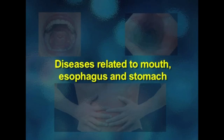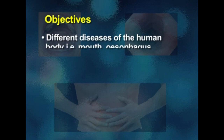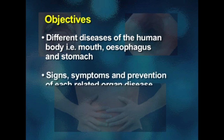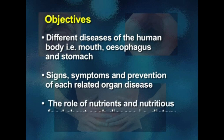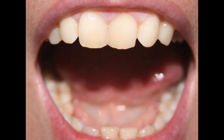My name is Jessie. Today's topic is diseases related to mouth, esophagus, and stomach. The objectives are related to different diseases of the human body — that is, mouth, esophagus, and stomach — covering signs, symptoms, and prevention of each organ disease, as well as the role of nutrients and nutritious food about each disease, that is, dietary management.